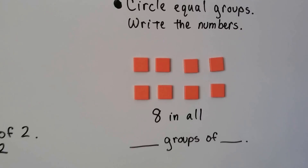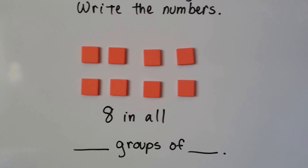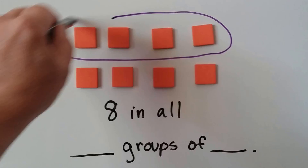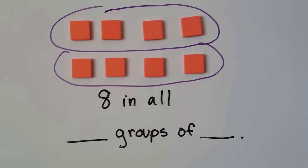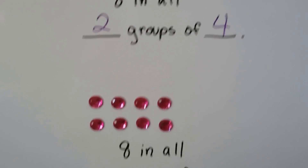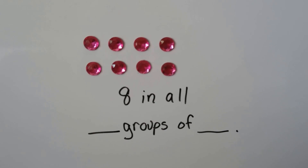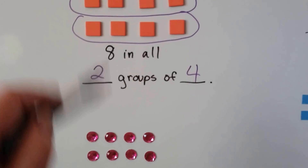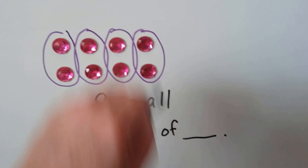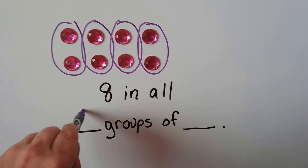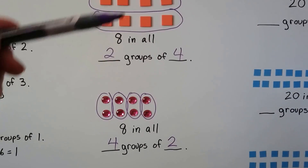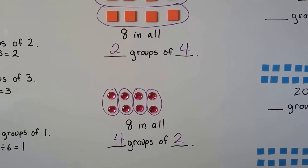We can circle equal groups and write the numbers. It says there's eight in all. Can we make equal groups? We can make a group of four and a group of four — that would be equal groups. We would have two groups of four. Now we have eight again. How else can we split this up? We had two groups of four, but what if we went this way and made four groups? We could make four groups of two, and it's still eight. We could either do two groups with four in each group, or four groups with two in each group.